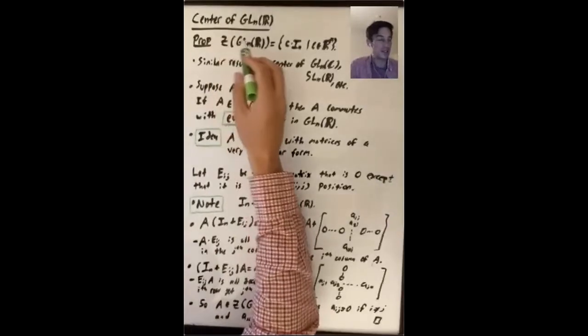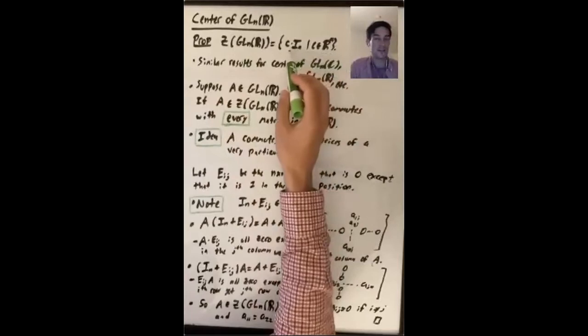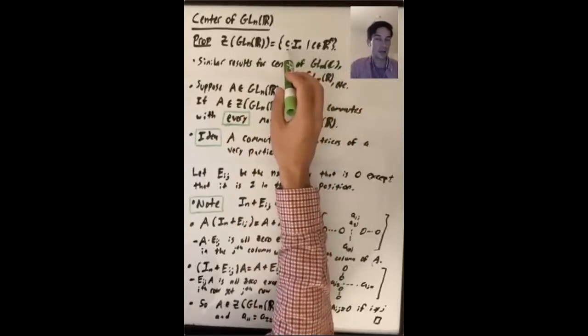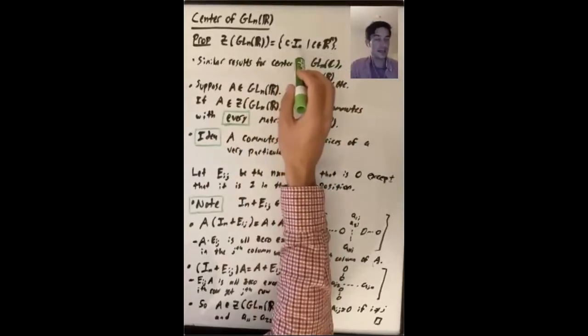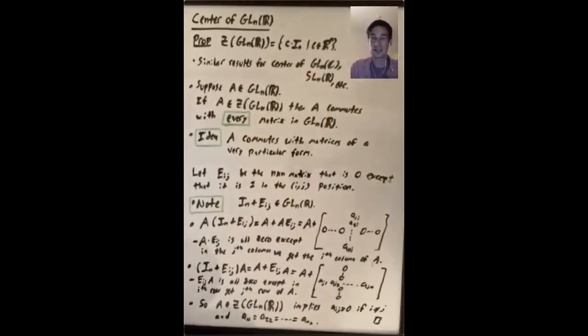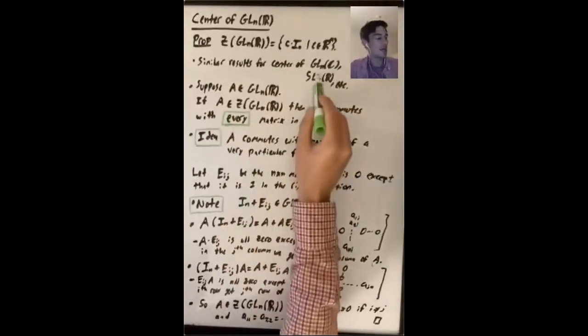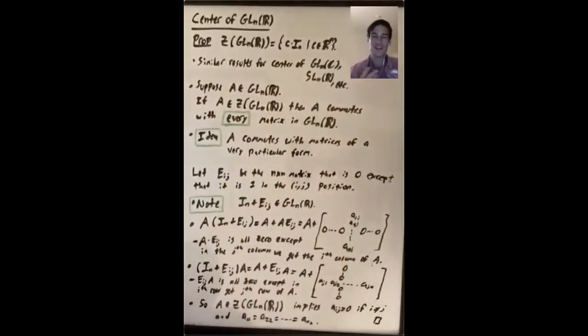The thing we want to prove is that the center of GLnR is the set of all matrices of the form c times the n by n identity matrix, where c is in R star. So this is a scalar matrix. The argument we'll give here doesn't really change much if you change GLnR to GLnC or to SLnR or something similar.